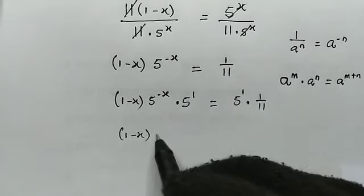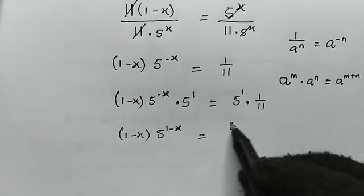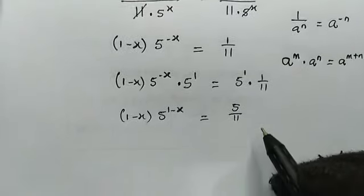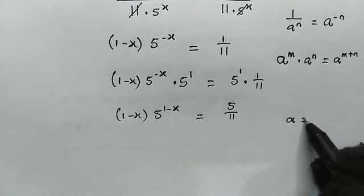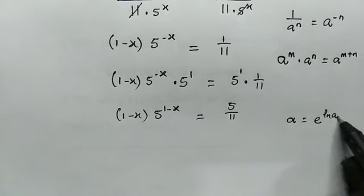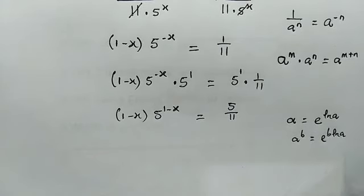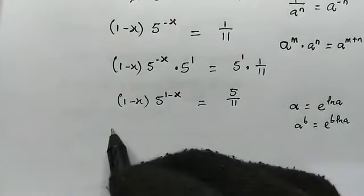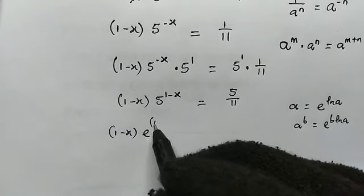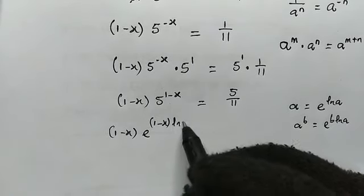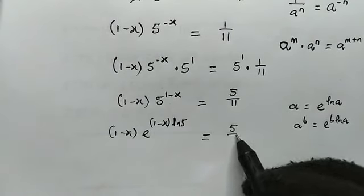So here we have 1 minus x times 5 to the power of 1 minus x, and this will be equal to 5 divided by 11. Now let us take note that A is the same as e to the power of ln A. If A has the power of B, this will be e to the power of B times ln A. So here this is 1 minus x times e to the power of 1 minus x times ln 5, equal to 5 divided by 11.